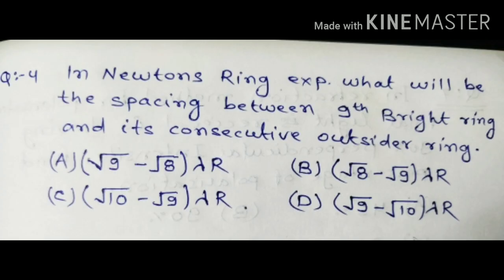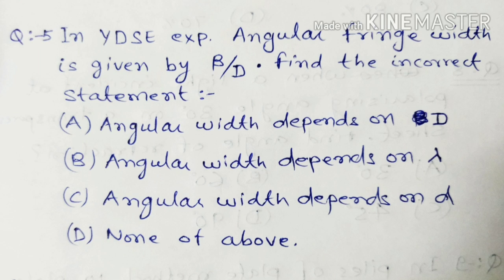The properties of e-ray and o-ray have already been described in the lectures. Question number four: what will be the spacing between the ninth bright ring and its consecutive outer ring in Newton's ring experiment? Be careful when reading the question.